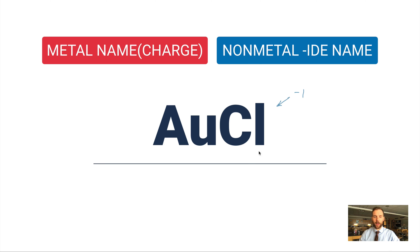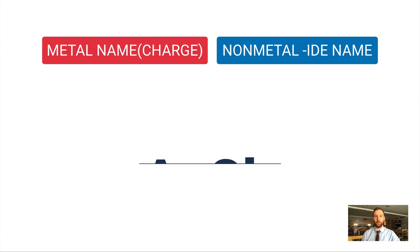If you look at the periodic table, it'll tell you that gold has a possibility of forming a plus one or plus three charge. I have one chlorine with a minus one charge and one gold, so this must have a plus one charge to balance it out. The name is gold(I) chloride. Notice there's no space between the metal name and the parentheses, no plus sign, and I'm using Roman numeral one.